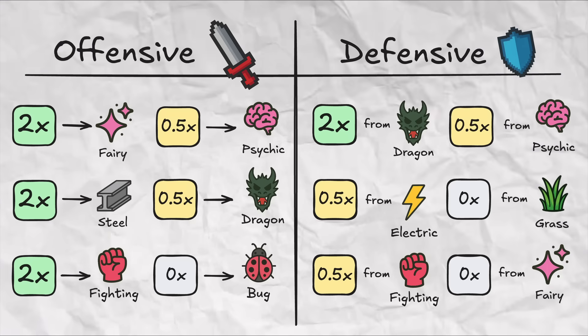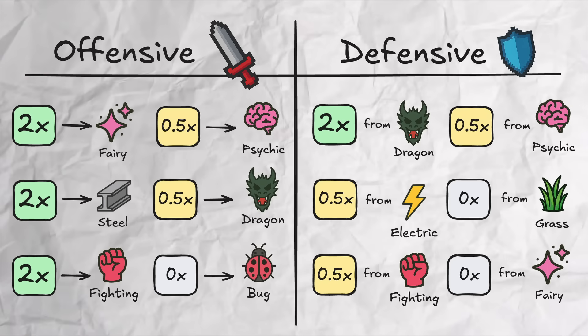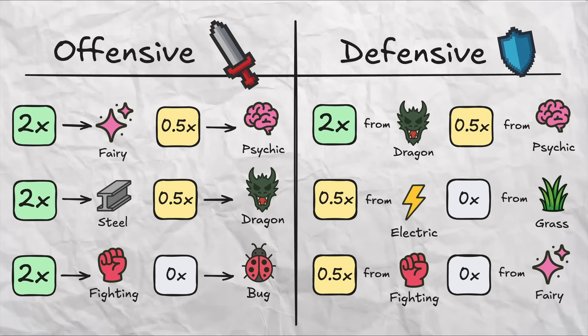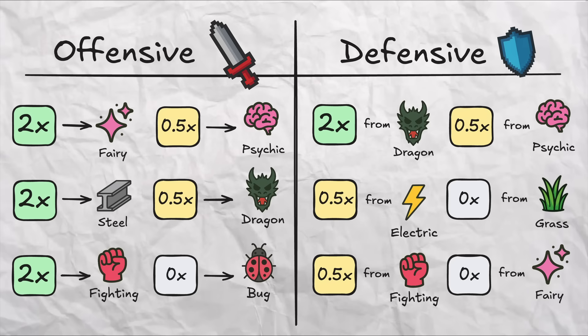Defensively, we see that Dragon hits our new type for super effective damage, Electric, Fighting, and Psychic hit it for half effective damage, and Grass and Fairy cannot touch our new type.